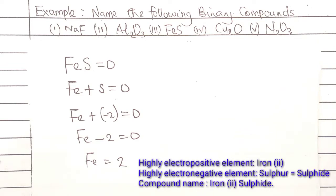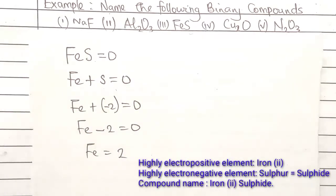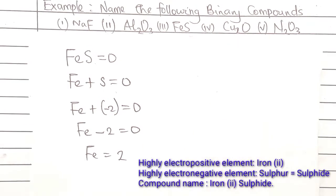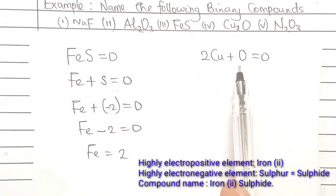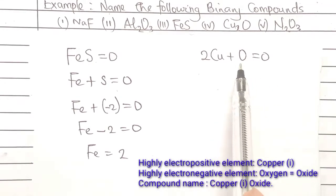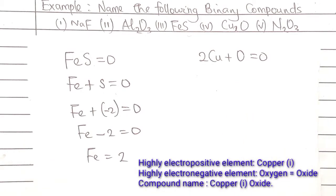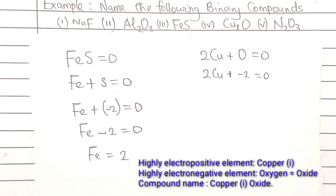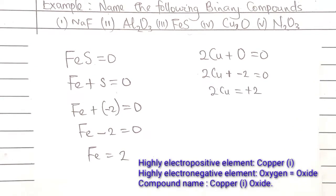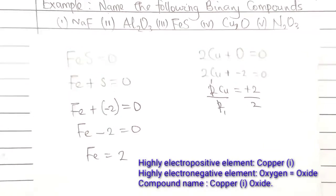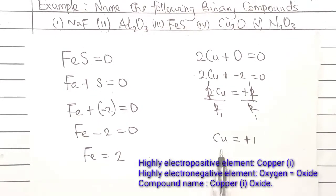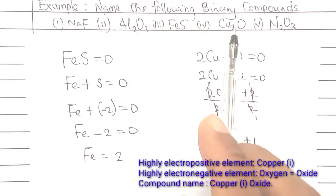For Cu2O, we need to find the oxidation state of Cu. Oxygen is already minus 2. There are two coppers, so: 2Cu + O = 0, meaning 2Cu + (−2) = 0. Making 2Cu the subject gives 2Cu = +2. Dividing both sides by 2, Cu = +1. Therefore, we name this compound copper(I) oxide.